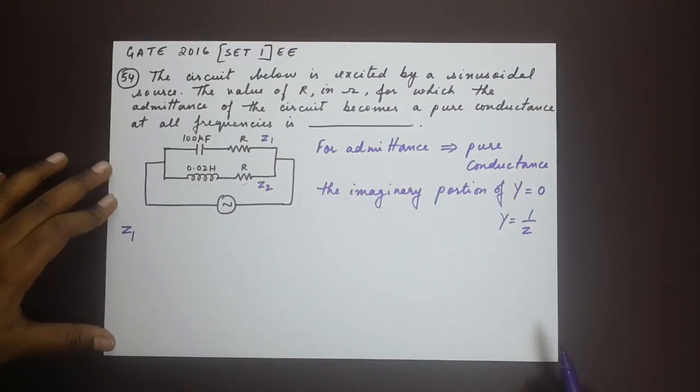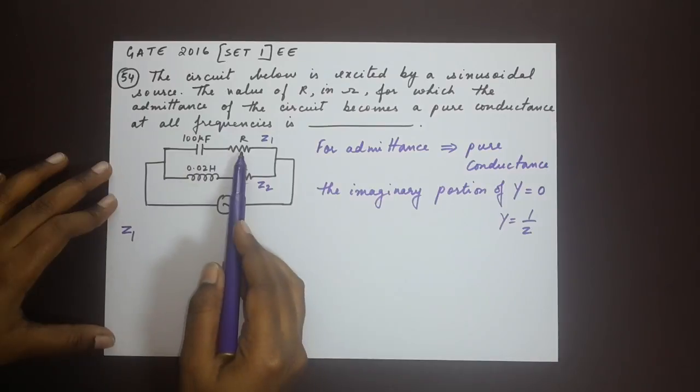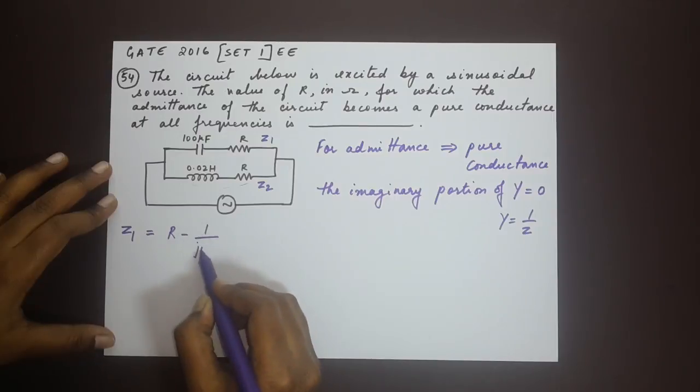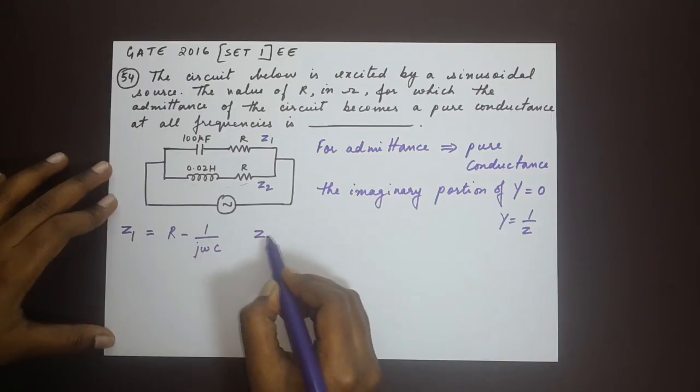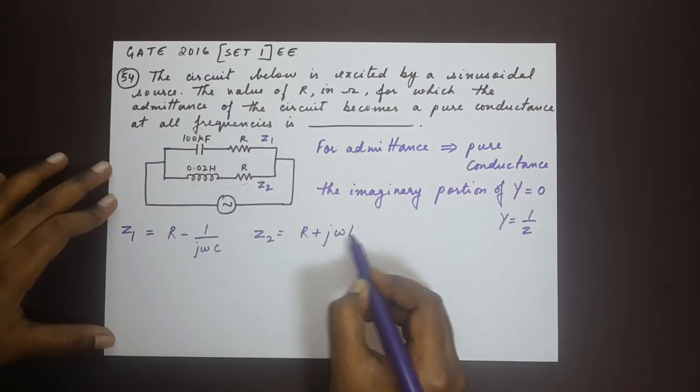Z1 first. Here I am going to first find out what z1 is. Z1 in terms of the capacitance and resistance is R minus 1 by jωc, and z2 is written as R plus jωL.